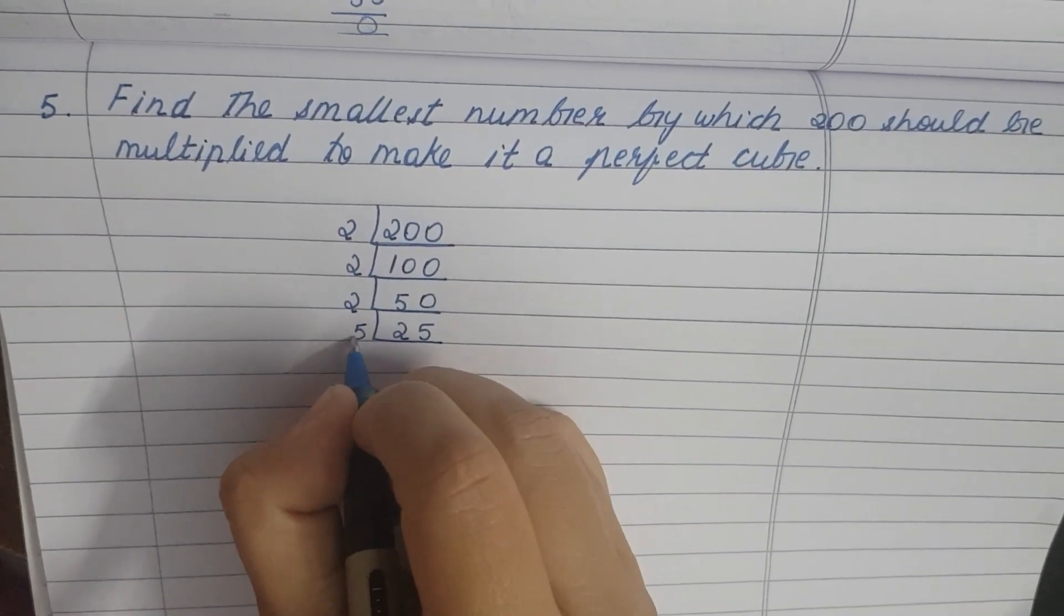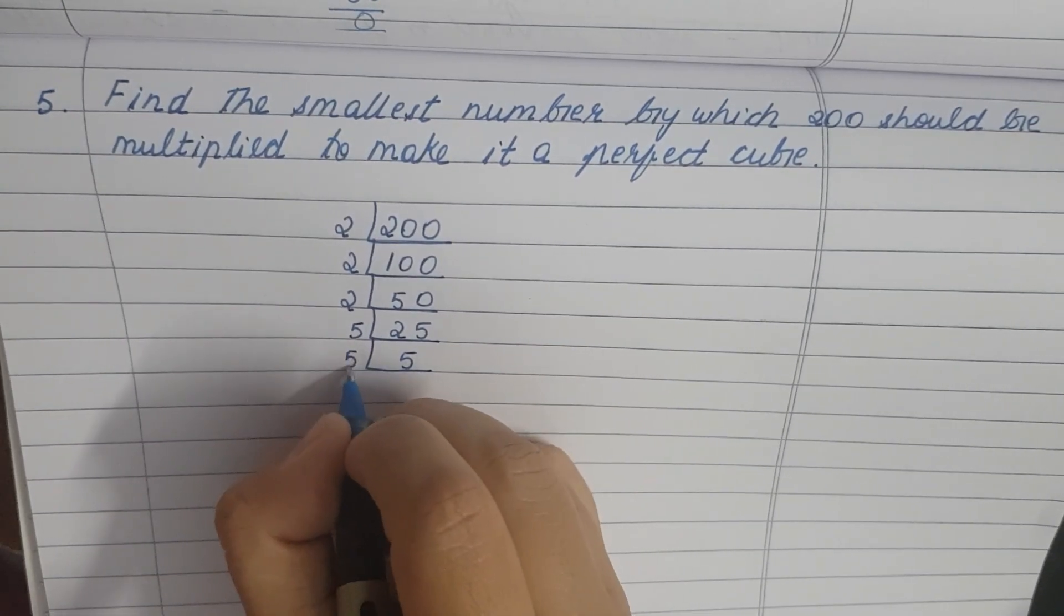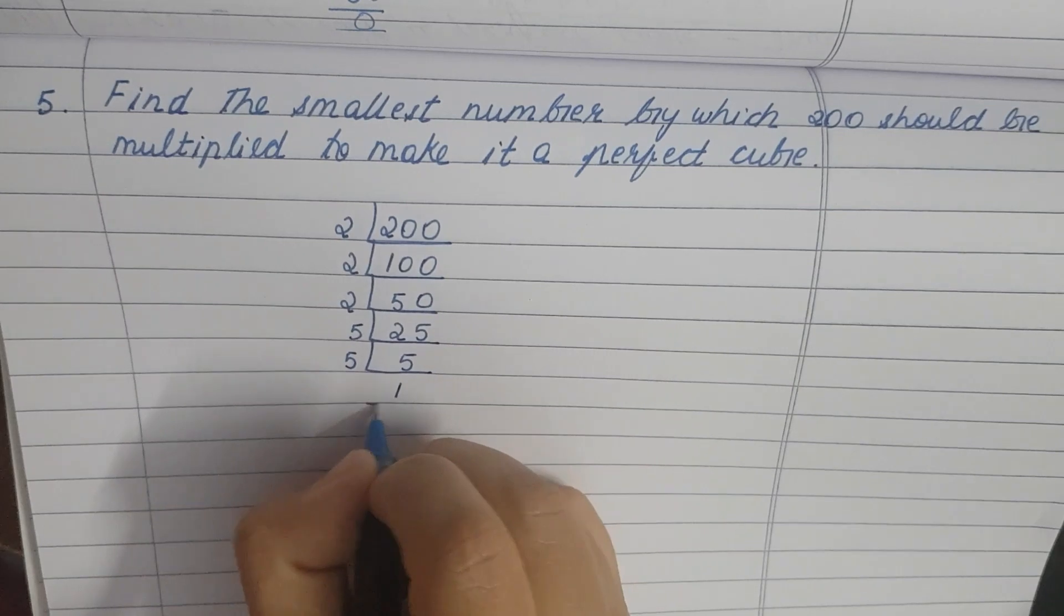Now 5, 5 goes into 25. 5 is a prime number, so it is divisible by itself.